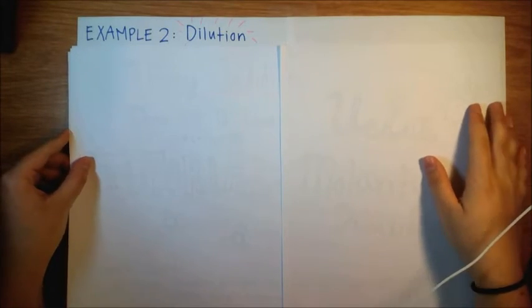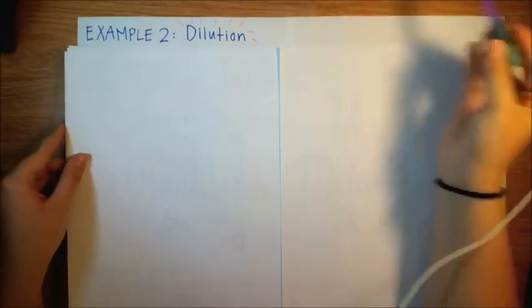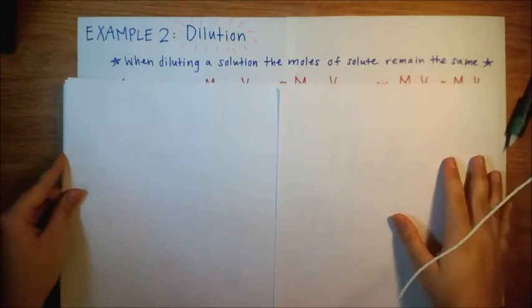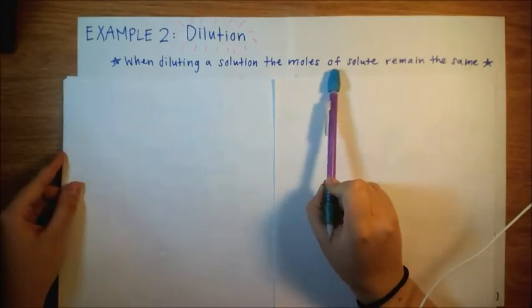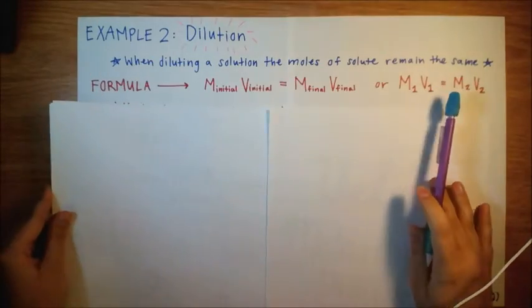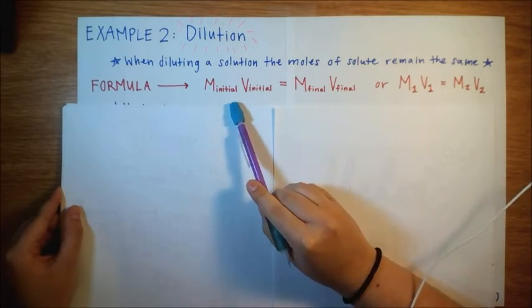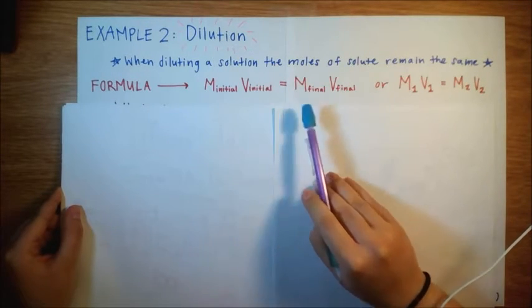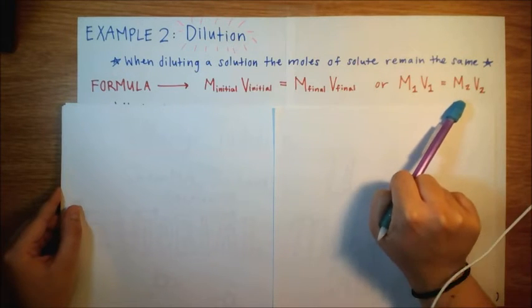Okay, so we're going to move on to the last example here, which is going to be a dilution calculation. So it's important to remember that when diluting a solution, the moles of solute always remain the same. The formula you're going to need here is M initial times V initial equals M final V final or M1 V1 equals M2 V2.